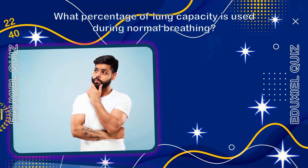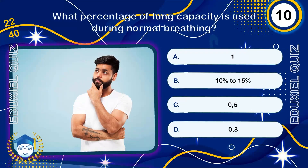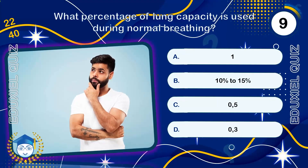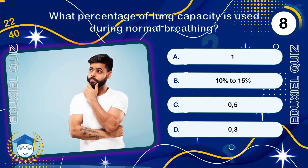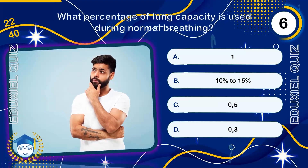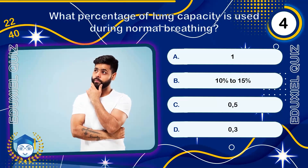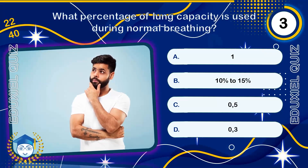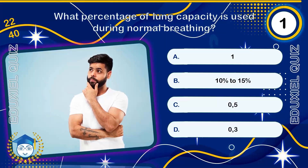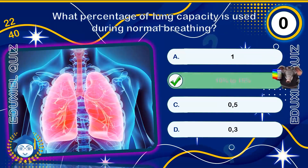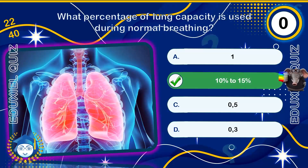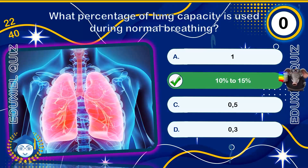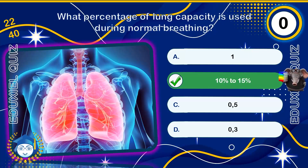What percentage of lung capacity is used during normal breathing? 10% to 15%. During quiet rest, we only use a fraction of our maximum lung capacity. Deep breaths or intense exercise are required to engage the full volume.